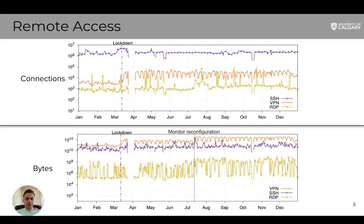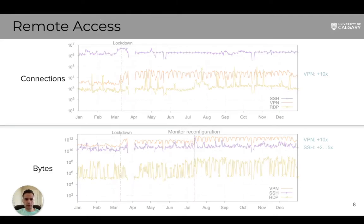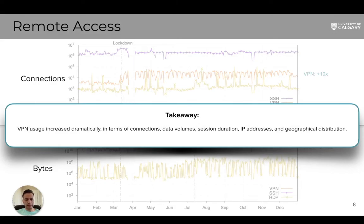This slide shows the time series graphs for the three remote access protocols in 2020. The upper graph shows the daily connection count and the bottom one illustrates the daily byte count. VPN connections and byte volume both increased right after the lockdown by a factor of 10, as VPN access is provided for the entire community. SSH connection count remains steady throughout the year and does not exhibit typical human-driven weekly patterns, since it is more research-driven. But its traffic volume increased two to five times after the lockdown. The takeaway is that VPN usage increased dramatically in terms of connections, data volumes, session duration, IP addresses, and geographical distribution.